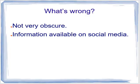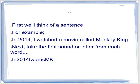Is there anything wrong with it? Well, the sentence I came up with isn't very obscure — it's the kind of information that could be available on social media. There could be a photo of me in Hualien at Chinese New Year. So maybe we could think of something that's a bit more obscure.